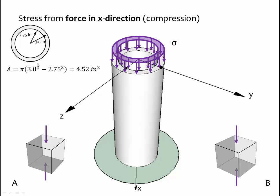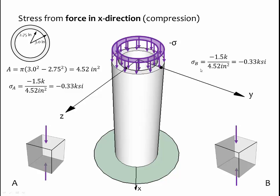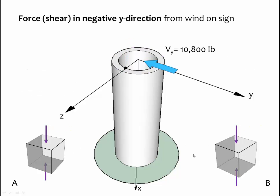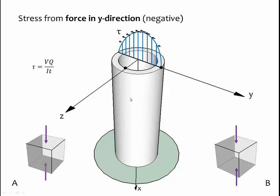Next, consider the shear force in the negative y-direction of 10,800 pounds. The shear stress equation is tau = VQ/IT. The distribution of shear stress is approximately parabolic, with maximum stress on the neutral axis and zero at the outer ends. Point A lies on the neutral axis, so it experiences the maximum shear stress from this internal shear force, acting in the negative y-direction.